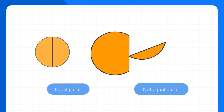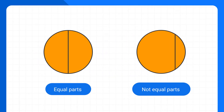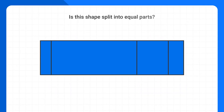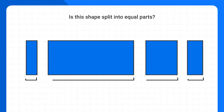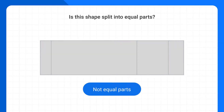Now that we understand what equal parts are, let's take a look at this shape and identify if it is split into equal parts. If we look at the different parts of this shape, we can see that all of the parts are not the same size. That means this shape is not split into equal parts.